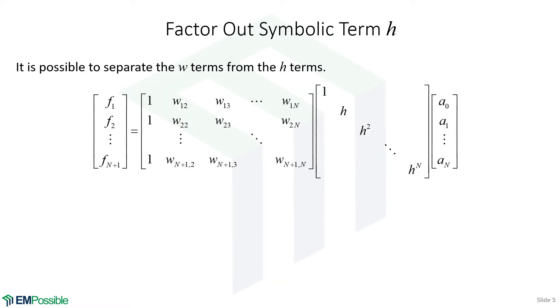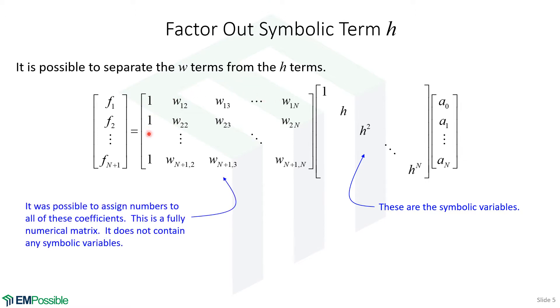We can take the X matrix and factor out the symbolic H terms. That becomes a diagonal matrix with 1, H, H squared, all the way up to H to the M. Inside this matrix are the symbolic variables. The fact that we've factored out those symbolic variables means what's left is all stuff we can put numbers to.